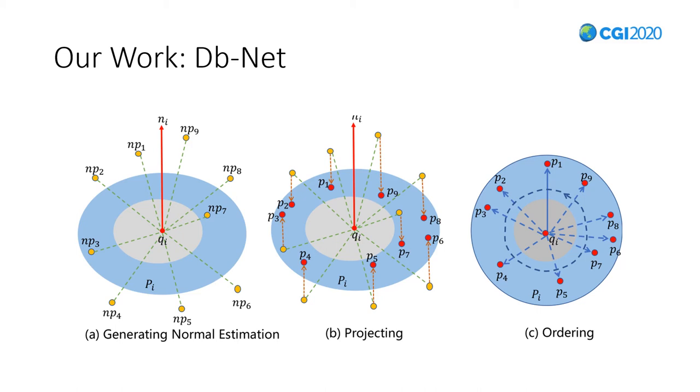A depicts the process of generating normal estimation. We calculate normal Ni of Qi through its neighboring points, NPi.